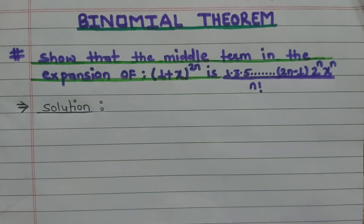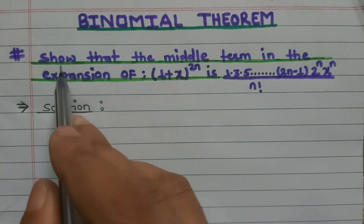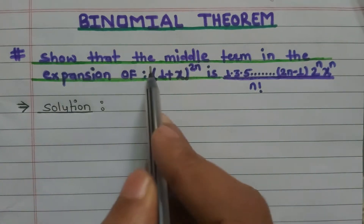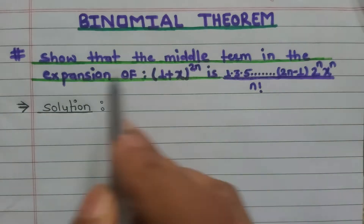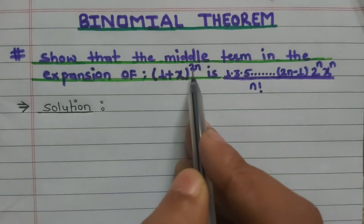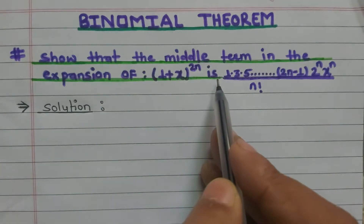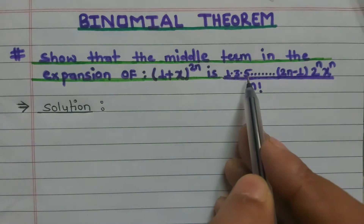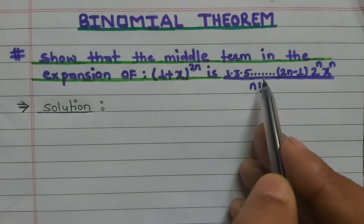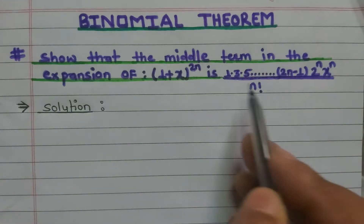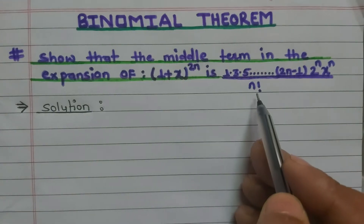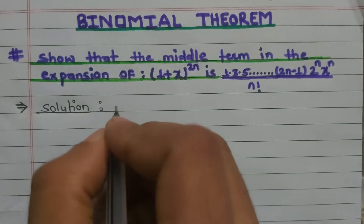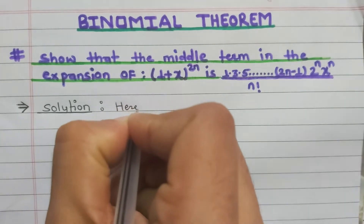Welcome back to my YouTube channel. Today I am going to teach you that the middle term in the expansion of (1+x)^(2n) is [1·3·5·...·(2n-1)/n!]·2n·x^n. First of all, we have to write the given data here.